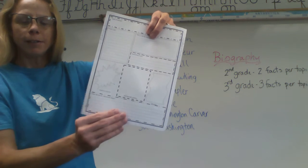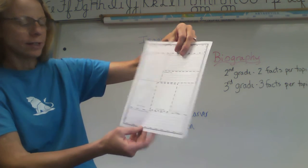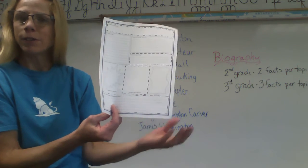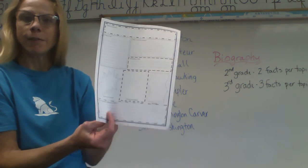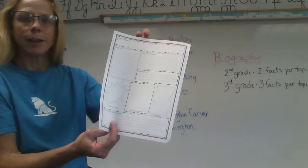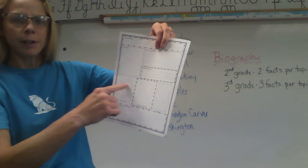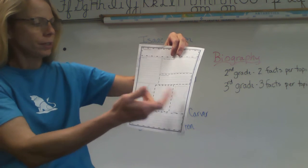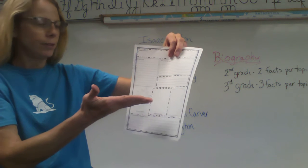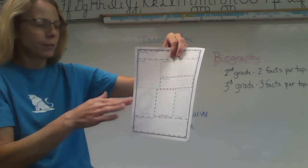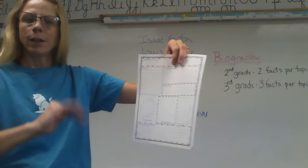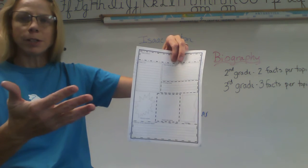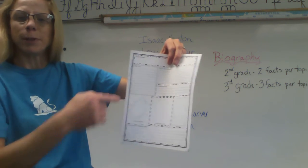And finally down here at the bottom is how has he or she influenced others — so how have their discoveries and what they figured out helped others. This middle part here — these are optional, you don't have to do those. But if you choose to, you can make them colorful and cut them out and put them on your writing report if you want to. But you don't have to do these little boxes.